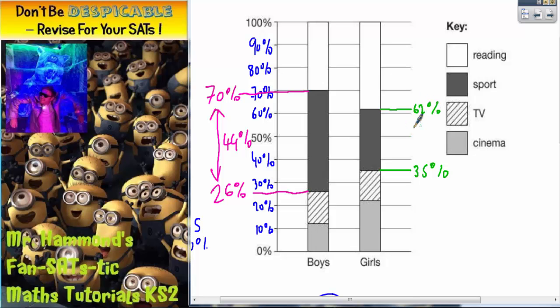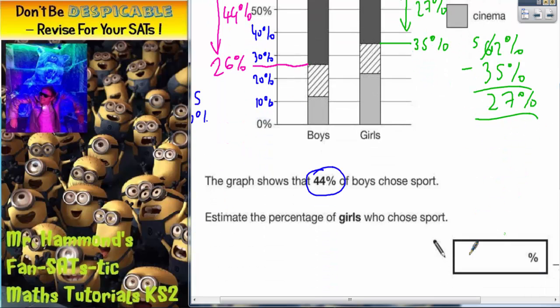Now, if we find the difference between 62% and 35%, we'll have our estimate. So, 62% take away 35%, 2% take away 5% we can't do. So, we borrow one, that makes 12. 12% take away 5% is 7%, 5% take away 3% is 2%. So, a good estimate for this gap would be 27%. So, we can write that in the answer space there.